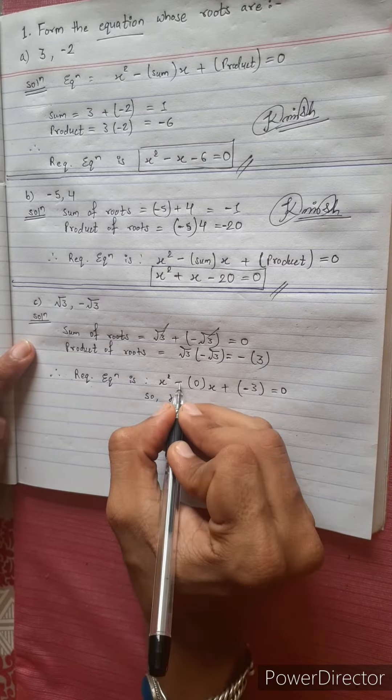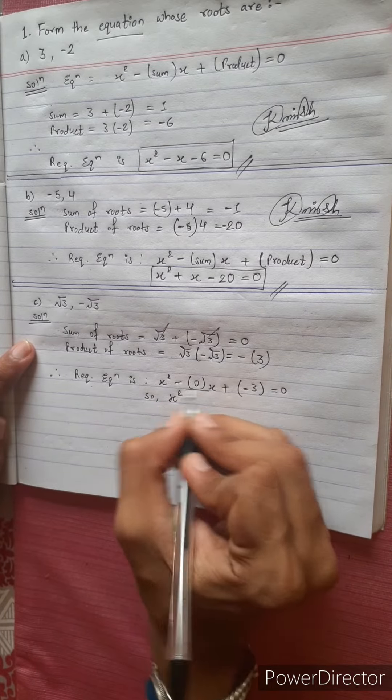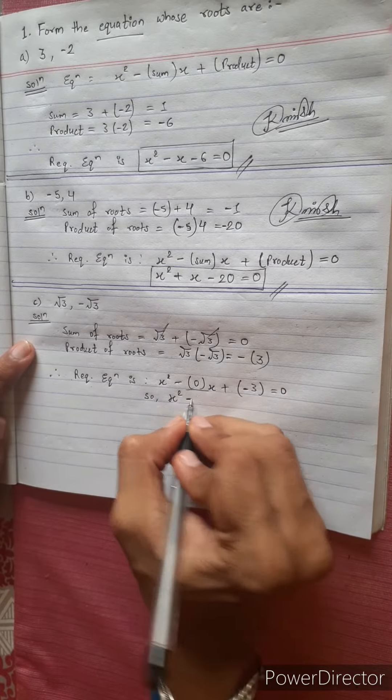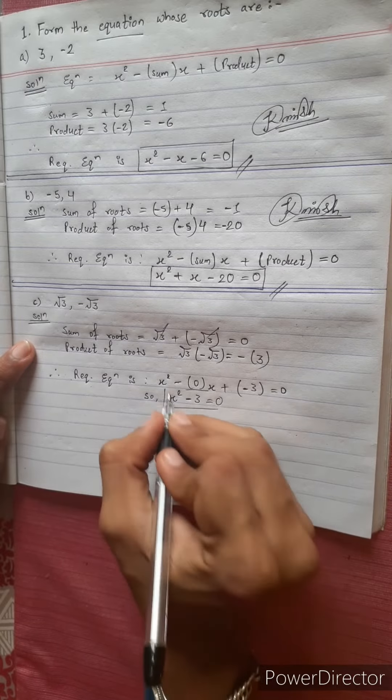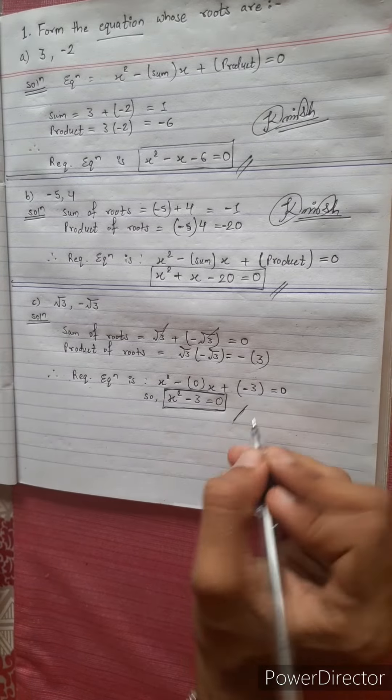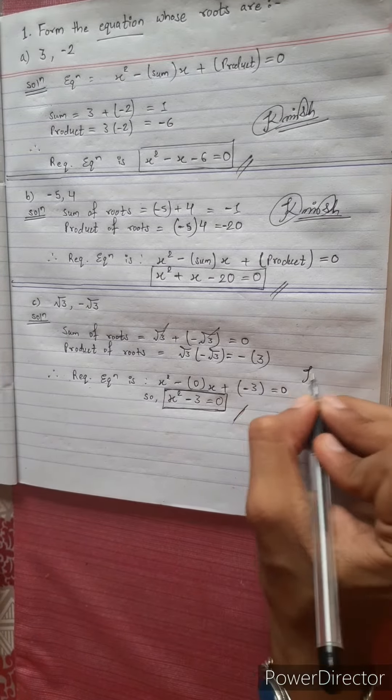So, x squared minus 0 into x equals 0, minus 3 equal to 0. The resulting equation x squared minus 3 equals 0 is your answer.